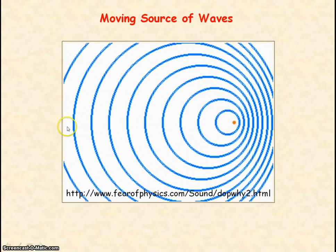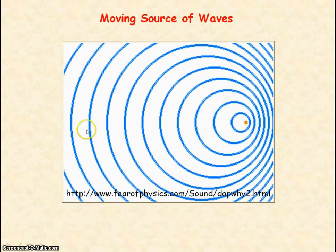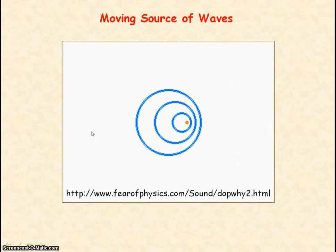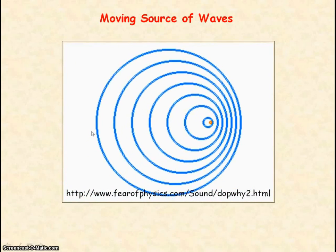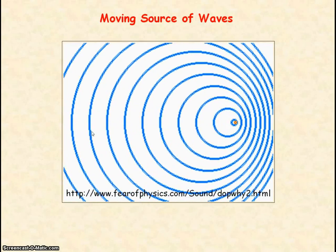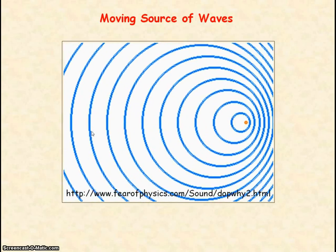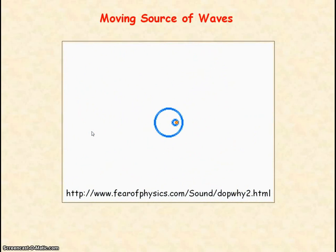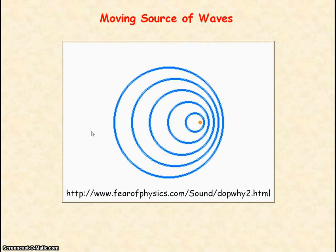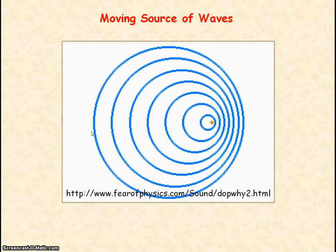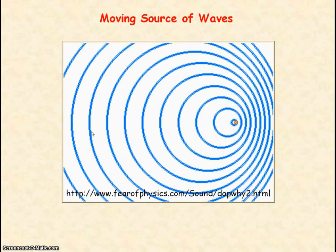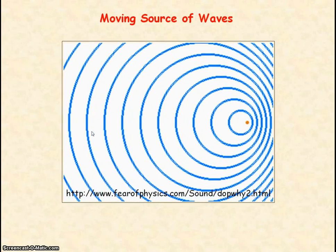If the observer was behind the moving source of waves, as the source of waves is moving away from the observer, the observer will detect a lower frequency or longer wavelength.